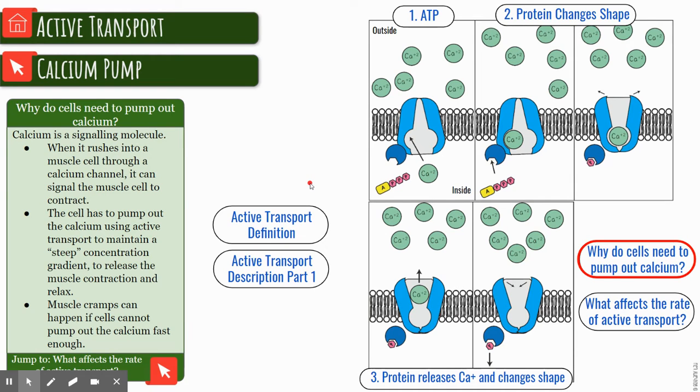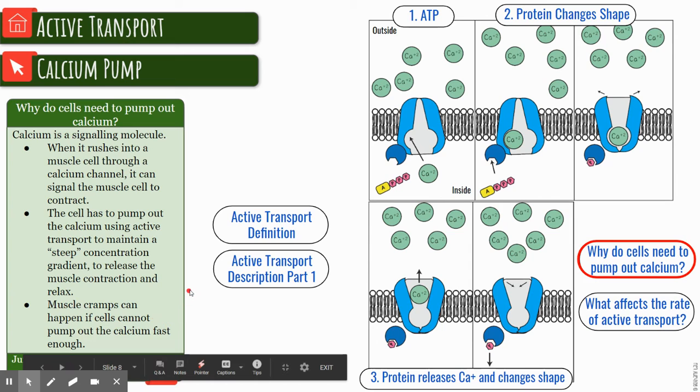So why do we need calcium to be pumped out anyway? When calcium rushes into a muscle cell through the calcium channel, it can signal the muscle cell to contract. The cell then pumps out the calcium using active transport to maintain a very steep concentration gradient to release the muscle contraction and allow that muscle to relax. When you get a muscle cramp, it's when these cells cannot pump out calcium fast enough.